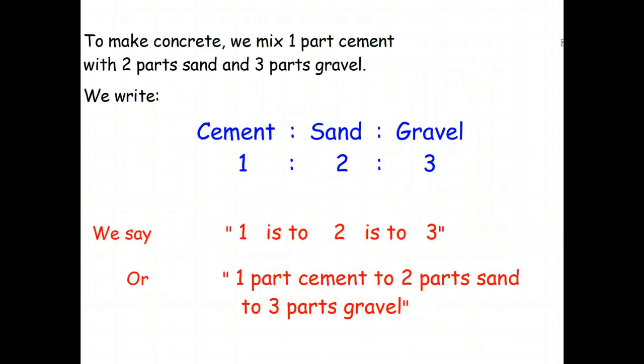Let's have a look at some of the terminology we use in ratios. So to make concrete, we mix one part cement with two parts sand and three parts gravel. And here's how we write that. We actually write it using the colon. So this reads cement is to sand is to gravel.